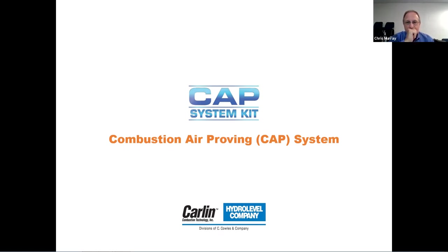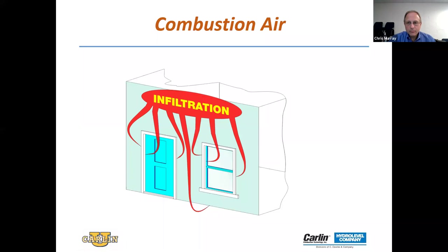When we talk about combustion air, the average person is probably making certain assumptions about where this combustion air is coming from. Oftentimes we're just relying on infiltration — air coming through whatever leaks there might be in the construction of the house. That seemed fine for many years ago, but today houses are built a little bit tighter, so that's not always going to be an effective way to introduce combustion air.